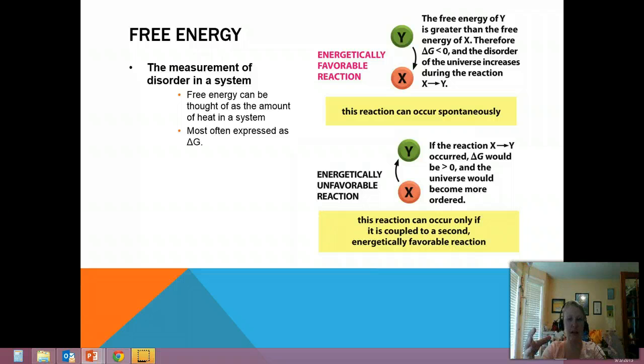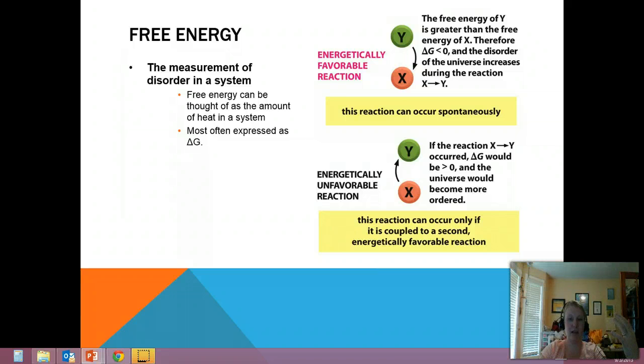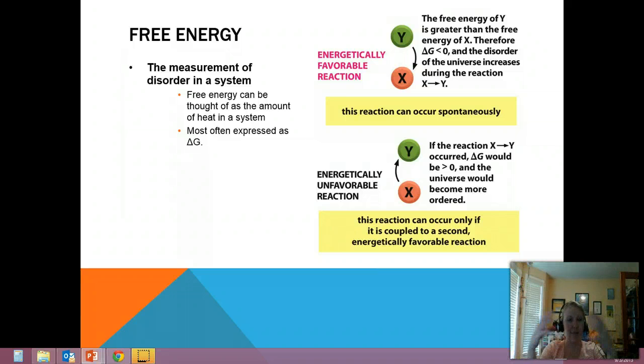If delta G is a positive number the reaction is unlikely to occur because it will be creating more order in the system and will violate the second law of thermodynamics. And so this is important because the reaction will usually need external energy such as that provided by ATP. And so this is where ATP comes into play.